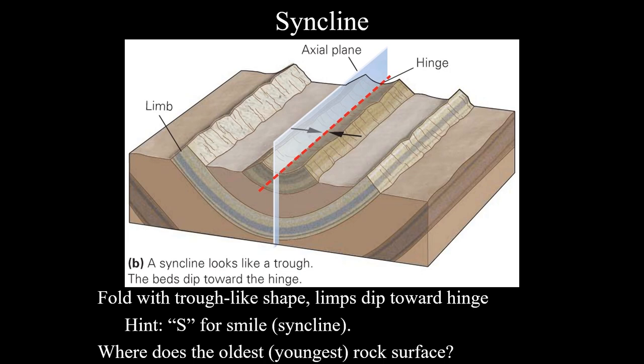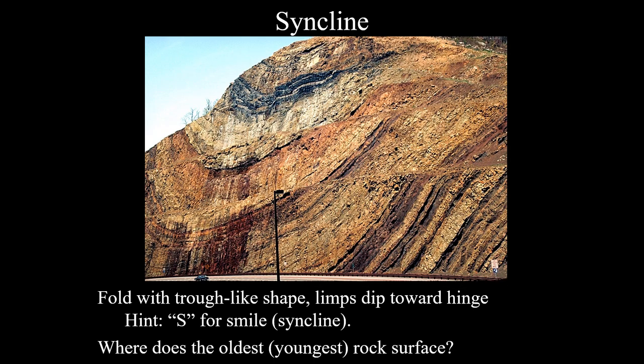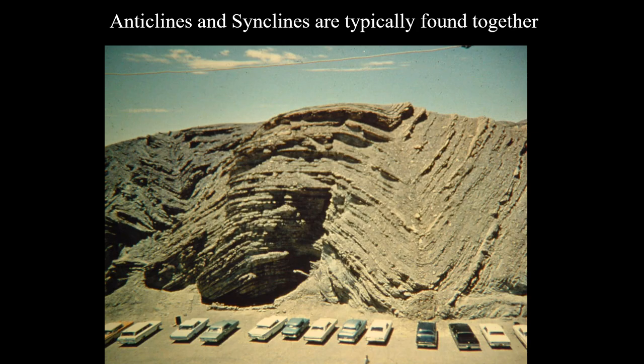A convex or trough-like shape that looks like a smile is a syncline — the youngest rocks are in the middle and they get progressively older toward the limbs, as determined by the law of superposition. In nature, synclines and anticlines usually don't occur as single units — like crumpling a piece of paper, you get multiple anticlines and synclines forming together. Usually you'll see them paired: a syncline with an anticline followed by another syncline.